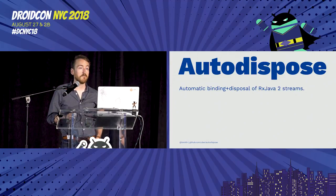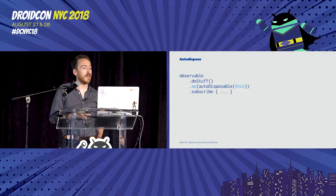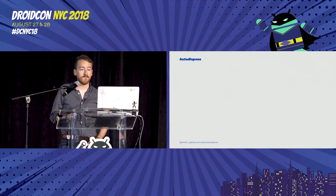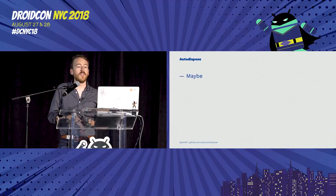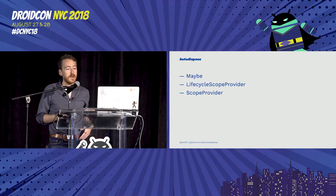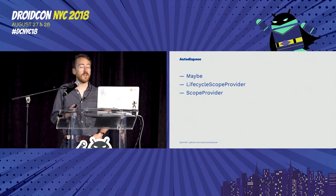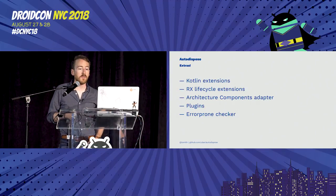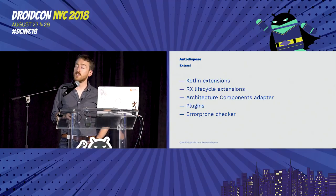Autodispose provides a simple API for use in your Rx chain to manage automatic binding of an Rx stream to a scope for disposal and cancellation. You construct your chain like any other, and then before subscribing, you call the static autodisposable method with one of three overloads: the maybe semantic modeled after takeUntil, which takes an observable that emits a signal to complete the stream; a lifecycle scope provider, an interface that exposes lifecycle events to signal completion; and a scope provider, an abstraction that allows objects to expose and provide their own scopes. Autodispose also exposes Kotlin extensions, Rx lifecycle extensions, adapters for architecture components, a plugin system, an error-prone checker, and more.